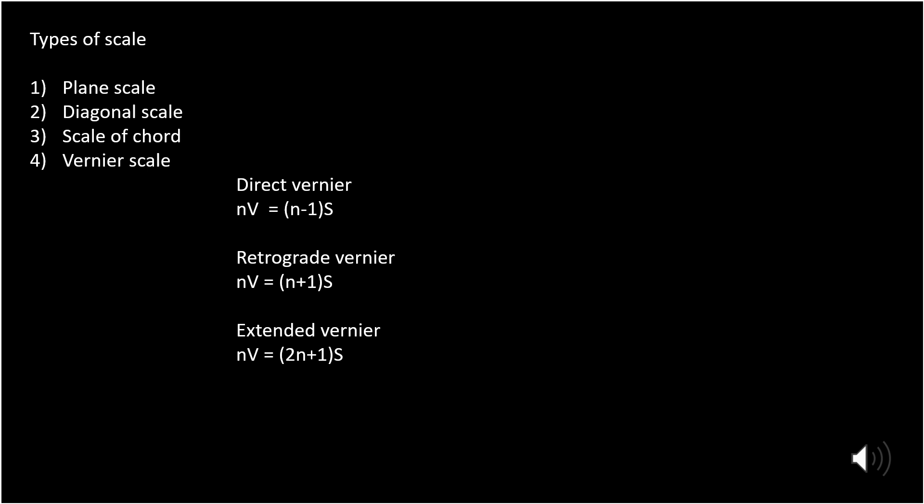From that straight line, we determine the value. For determining that, there are three types: first is direct, second is retrograde, and third is extended. There is one more type which is direct or double vernier.